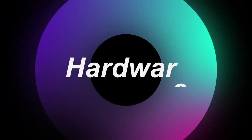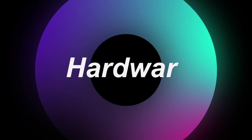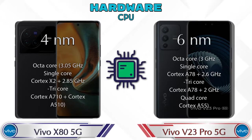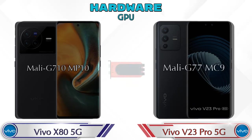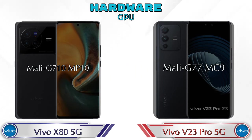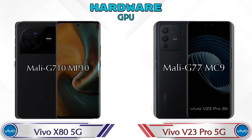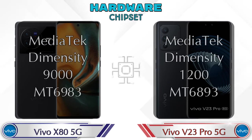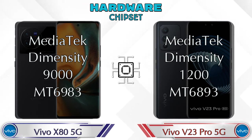First, let's talk about the most important part of the phone — hardware. Starting with the GPU: Vivo X8 5G has Mali-G710 MP10 and V23 Pro 5G has Mali-G77 MC9. For the chipset, Vivo X8 5G has MediaTek Dimensity 9000 MT6983 and V23 Pro 5G has MediaTek Dimensity 1200 MT6893.